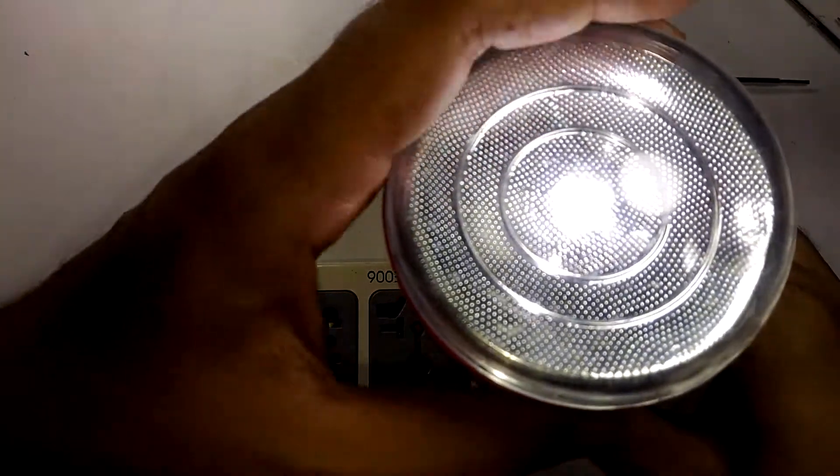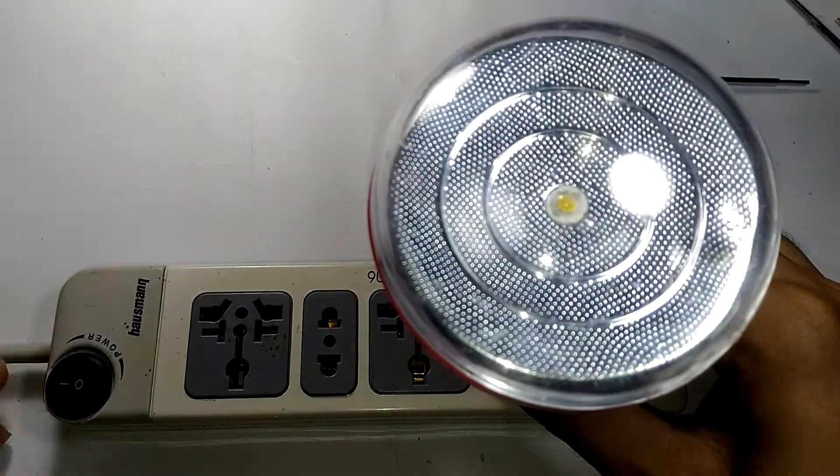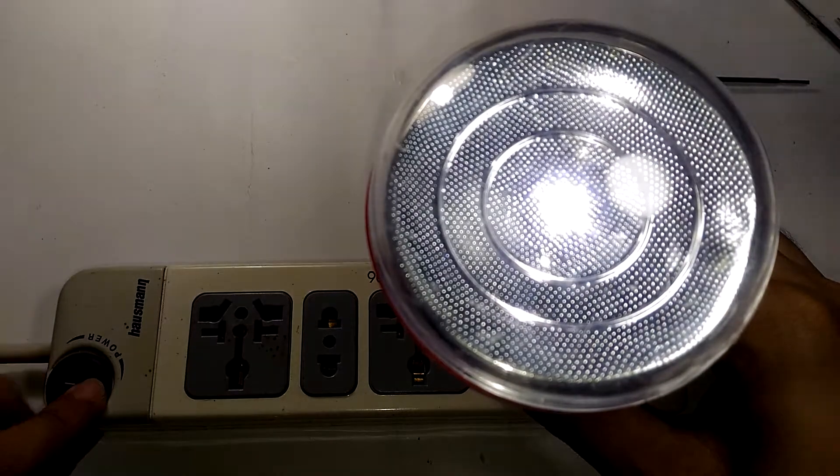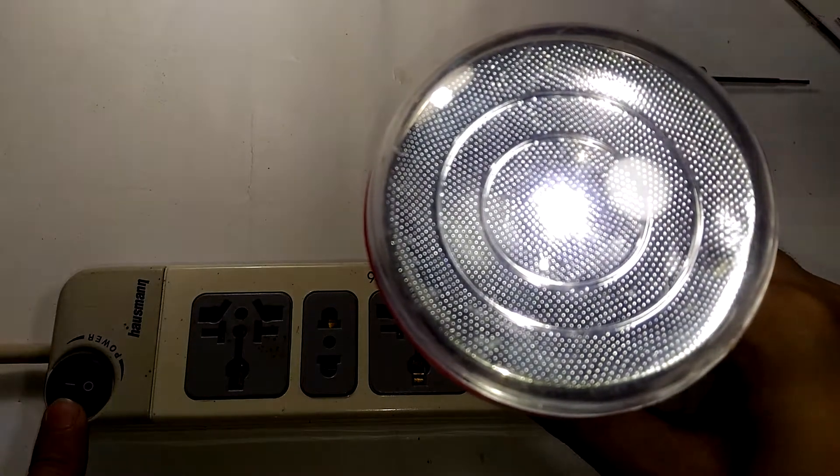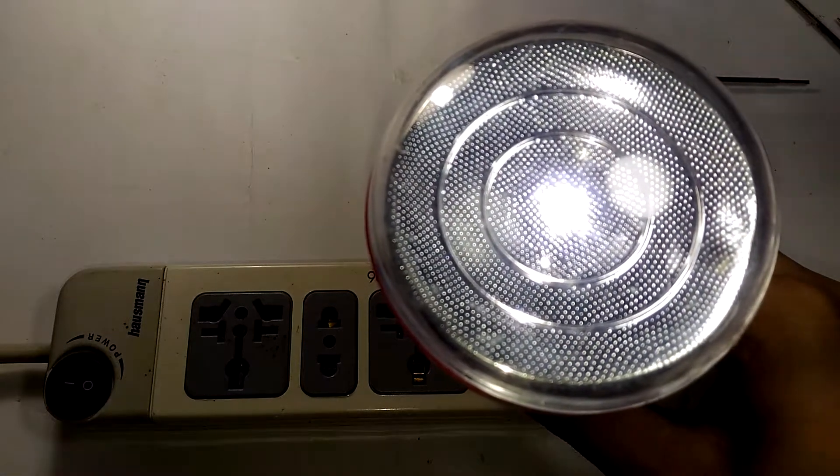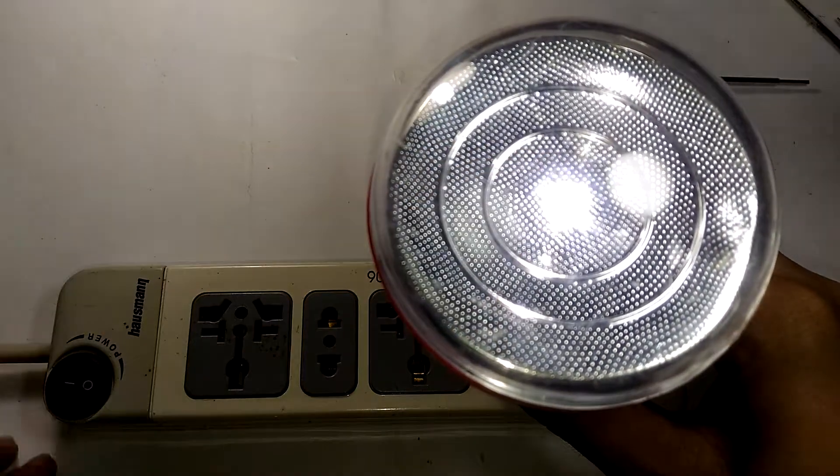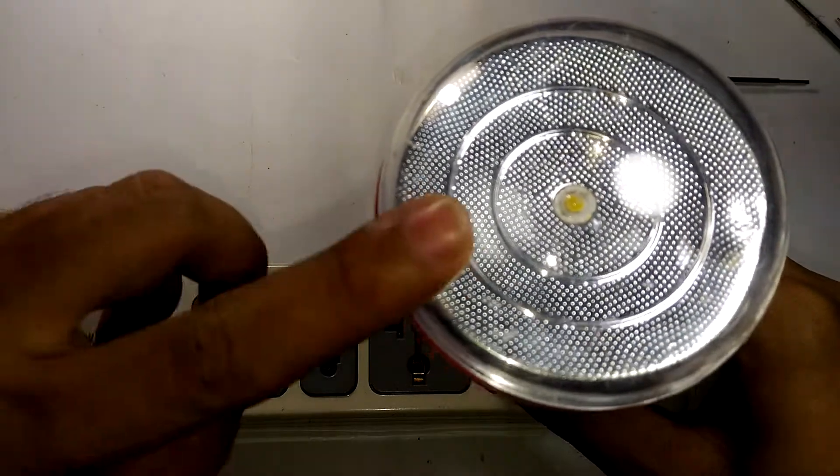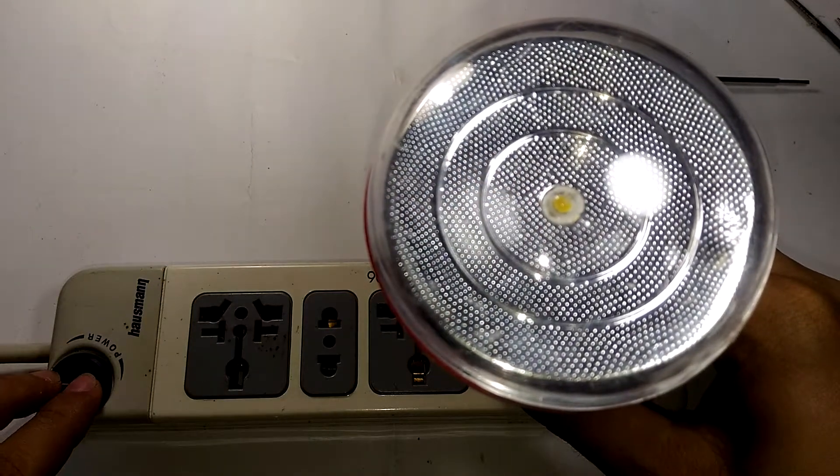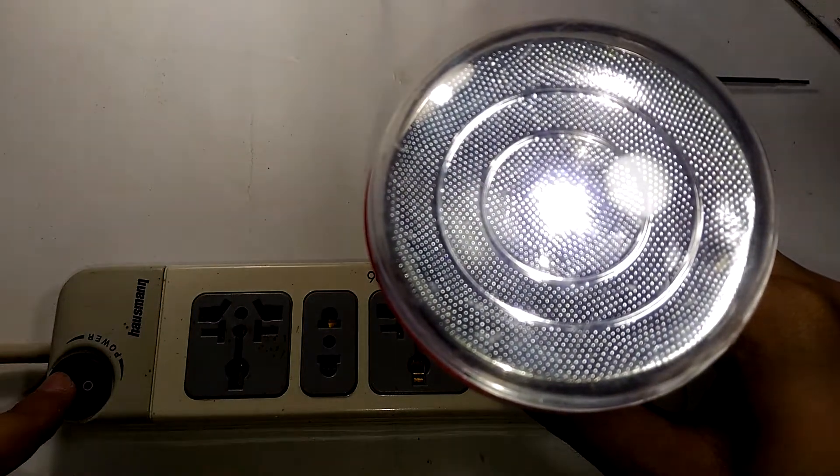If I change the switch to the other mode, it actually turns on when the power is turned off. What this means is that when the power fails, this thing is going to light up, and when the power comes back on, it turns off. That way, it's actually acting as an emergency light.